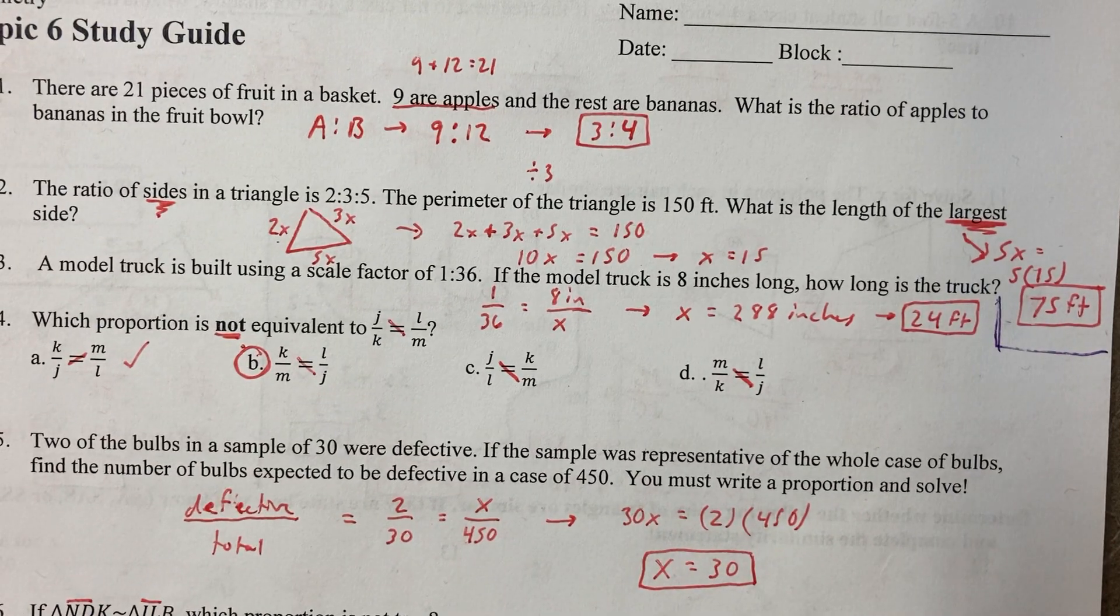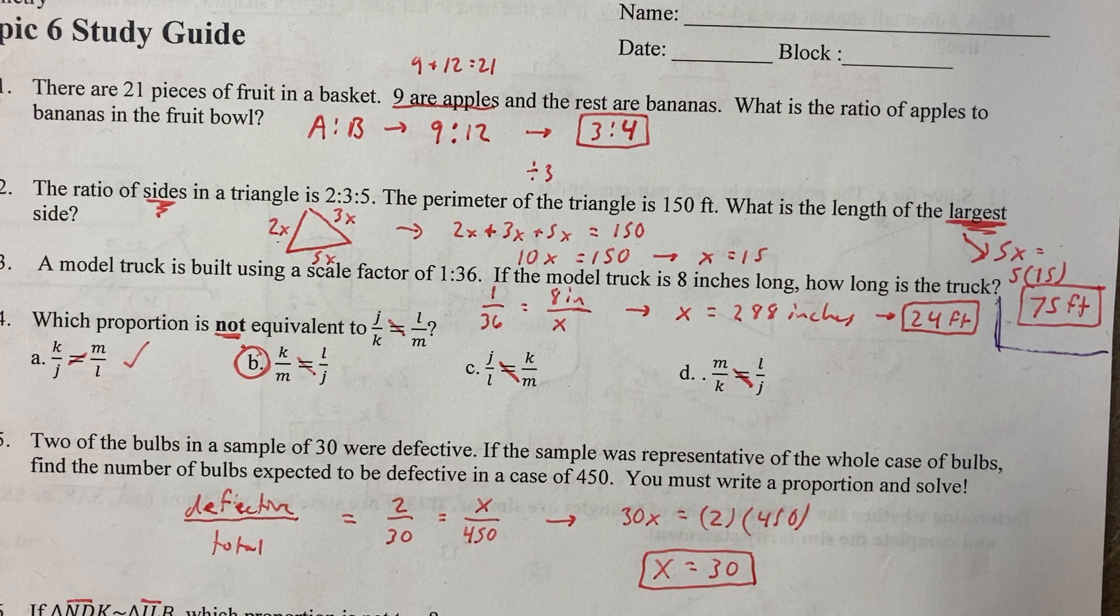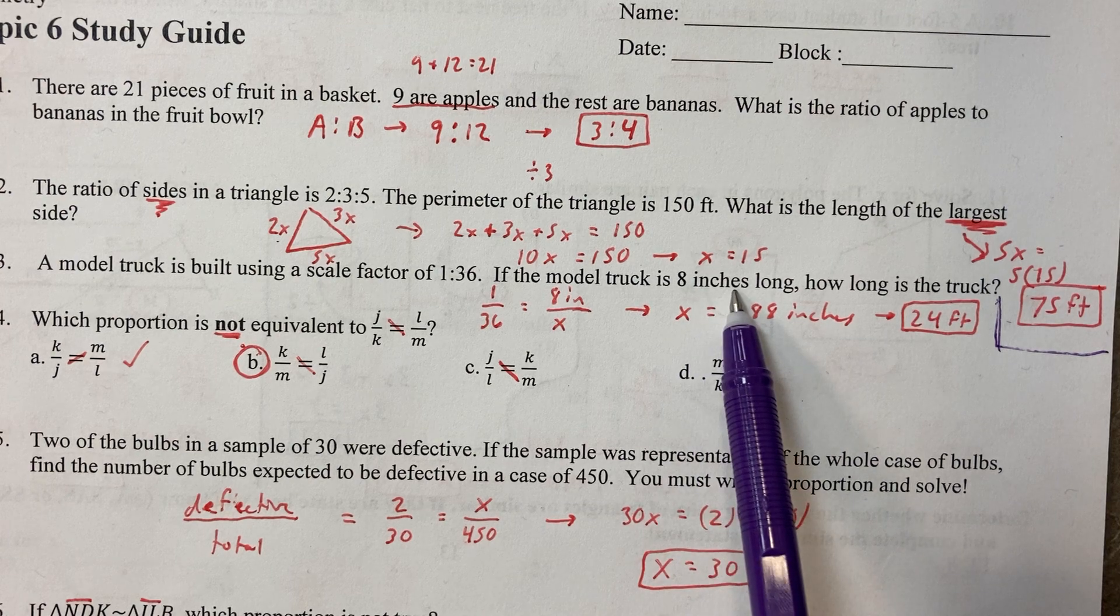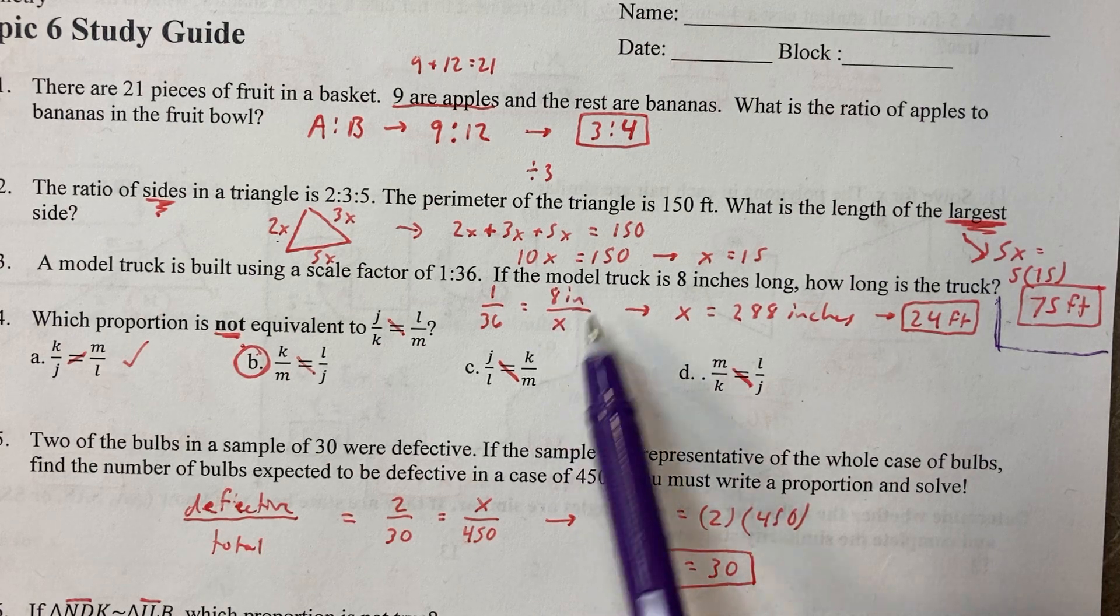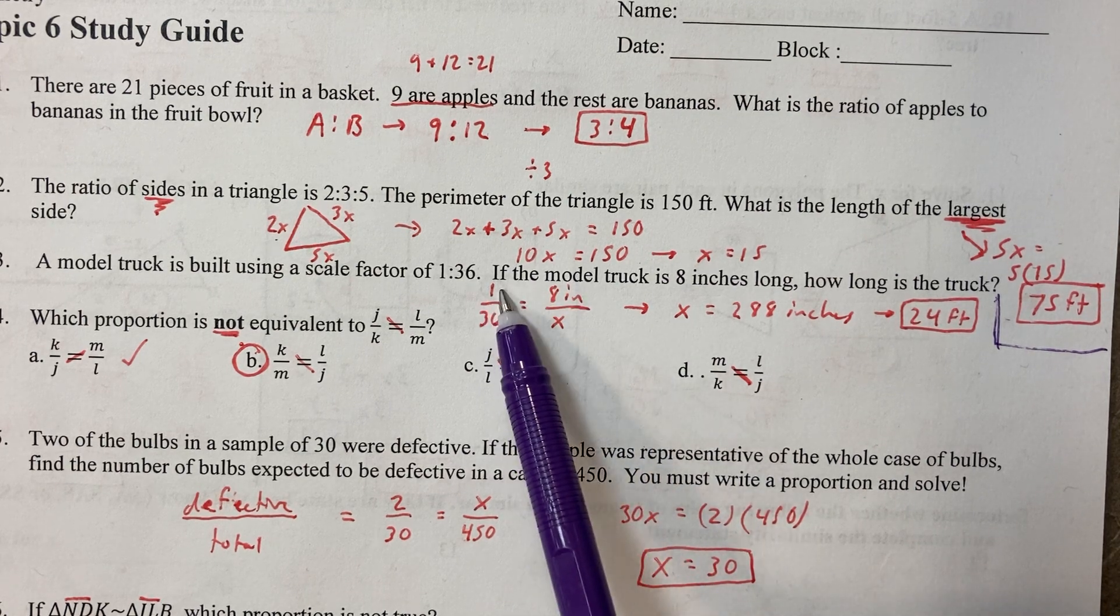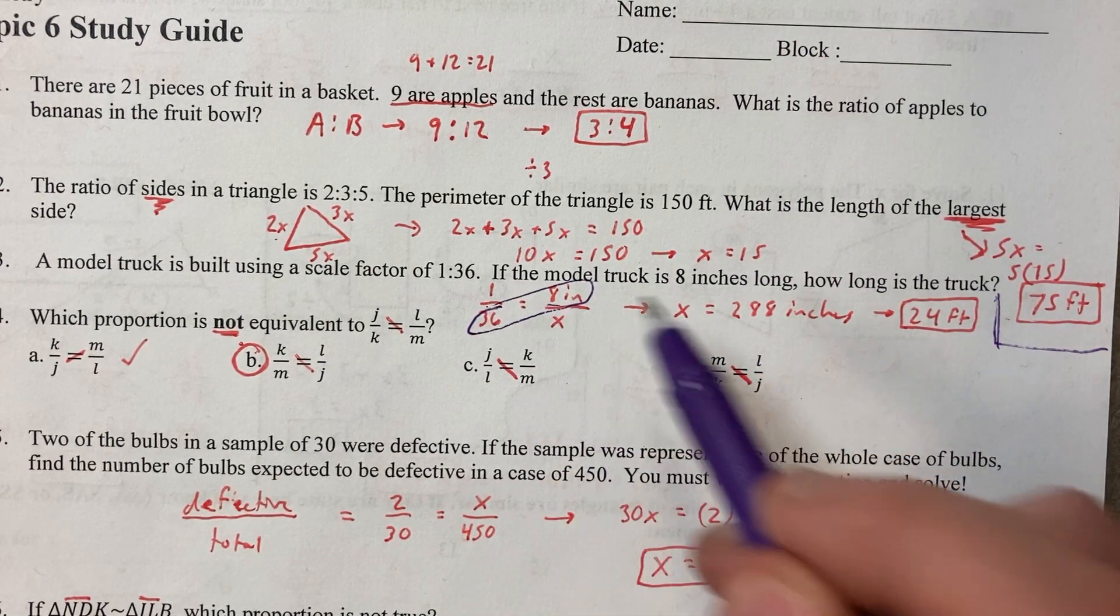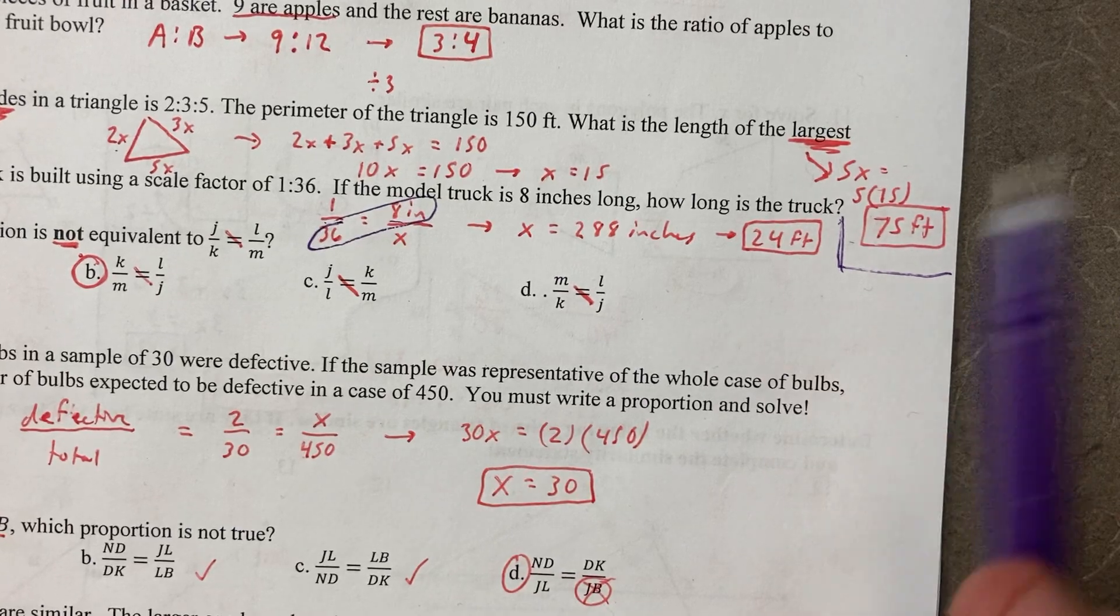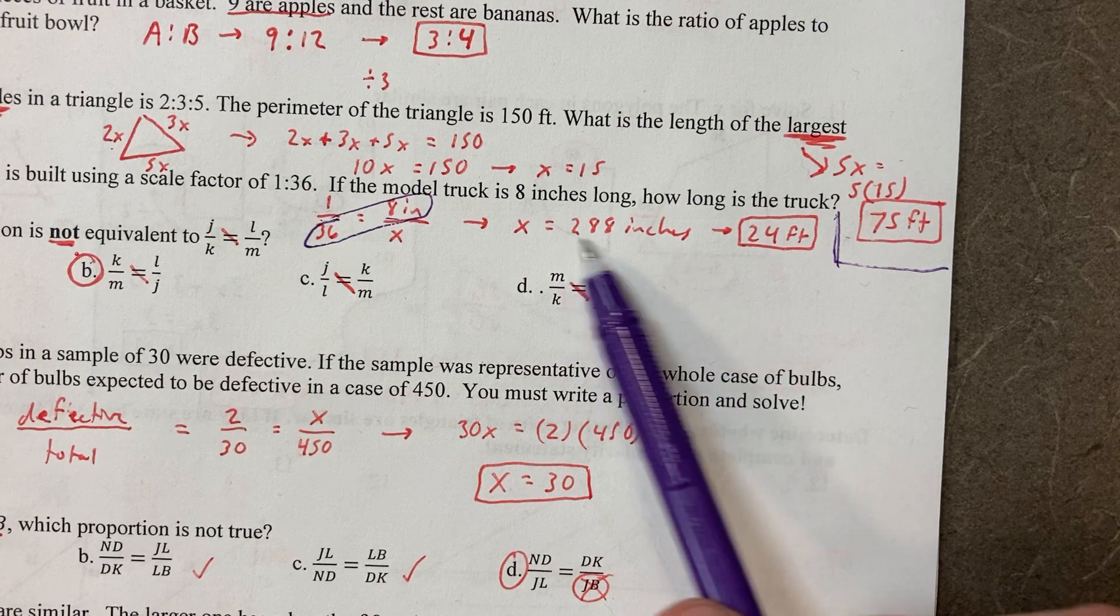Number three. We get a scale factor 1 to 36. Now we know that the model truck is 8 inches, the smaller one. I'm going to put 8 on top, small over large. Cross multiply and divide. You get 288 inches. Because you have inches on top you're going to get inches on bottom. Divide it by 12 if you want to get feet.